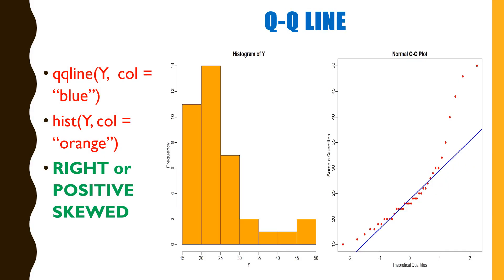Right or positive skewed graph. Opposite to the previous graph, data set Y produced a positive skewed graph. As you can see, data points making a curve inclining towards the bottom.